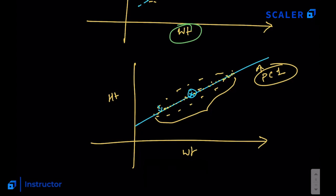If you draw another line at a right angle to Principal Component 1, you get a new dimension called Principal Component 2. You can only have as many new dimensions as the original number of variables, so with 2D data we can only create 2 new dimensions. But since the goal is dimensionality reduction, we stick with Principal Component 1, which best represents the variance in the data.